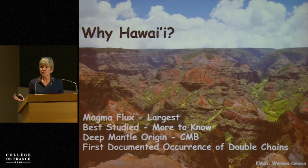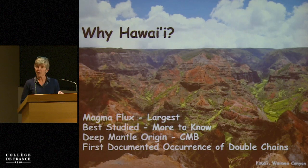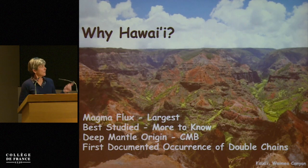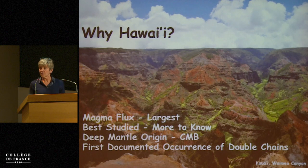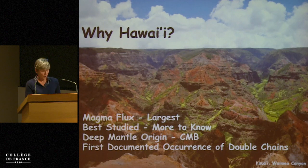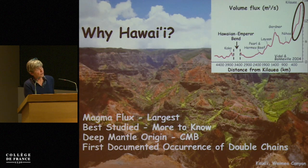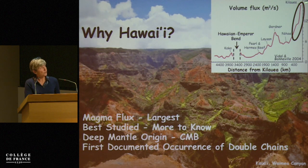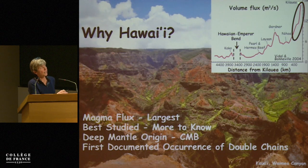Now, why do we want to focus on Hawaii? I don't want to go into too much detail, but Hawaii is actually very different from all the other mantle plumes. It has the largest magma flux. It's one of the best studied, and paradoxically, there is a lot more to know. It has a deep mantle origin, and it's also the first documented occurrence of double sheets. Hawaii also behaves differently: if you go from the distance from Kilauea back in time, you actually have an increase in volume flux of magma as you become younger, which is the opposite of the big plume head model, and the younger it is, the higher the increase.